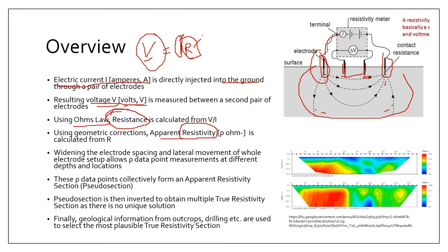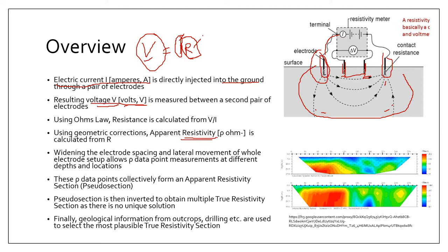My analogy is that resistance is your mass while resistivity is your density. Resistance depends on the mass, the path, the volume, or the amount of material you have, while resistivity is just an intrinsic property of your material. The ultimate objective of your resistivity survey is to obtain resistivity, and we can obtain what we call an apparent resistivity from your resistance by using some geometric correction factors.